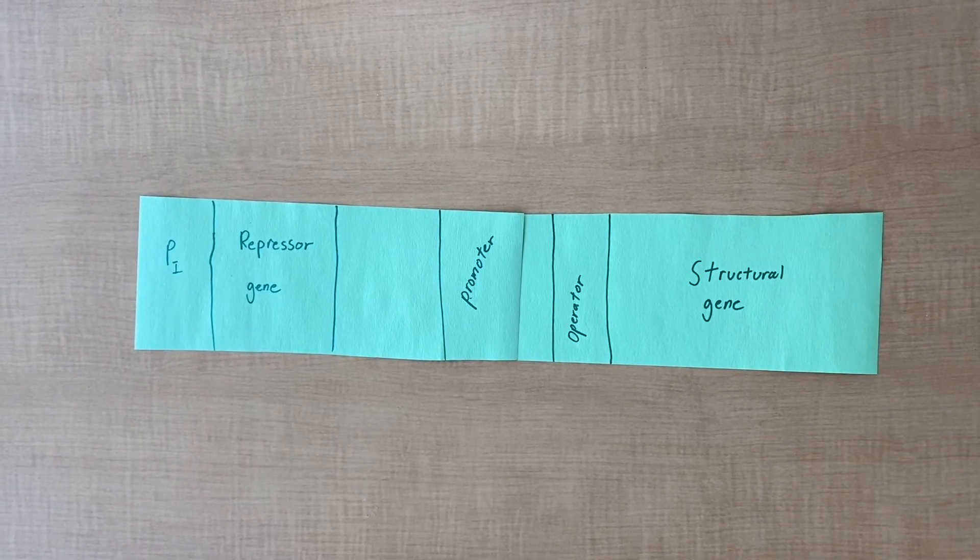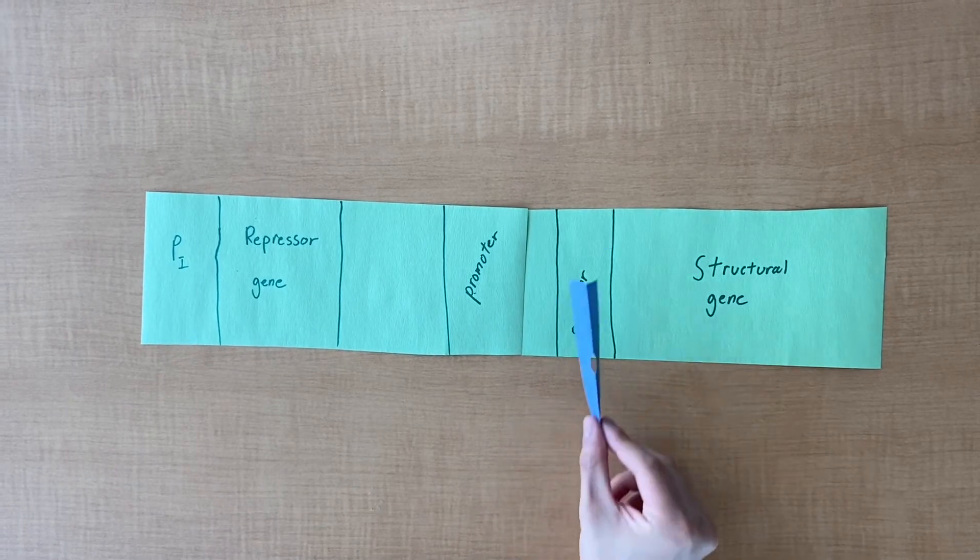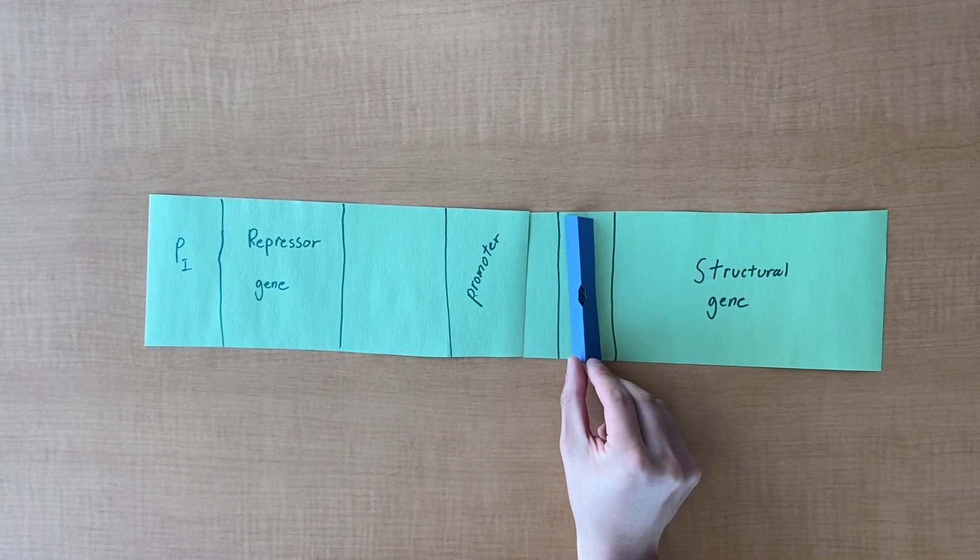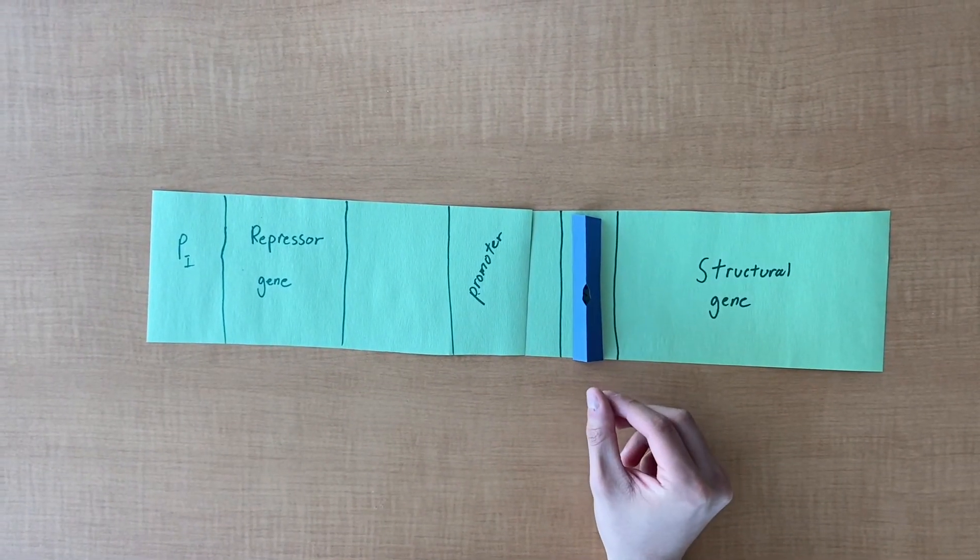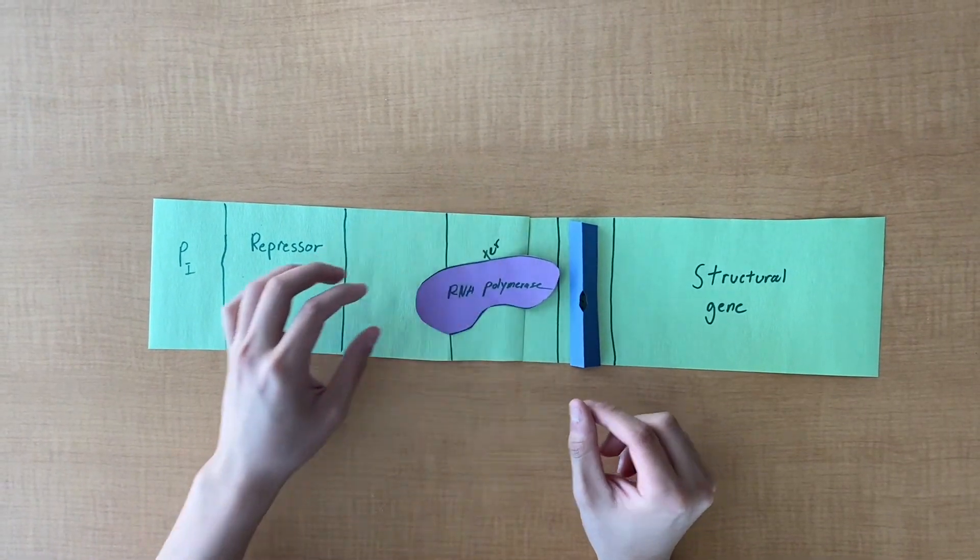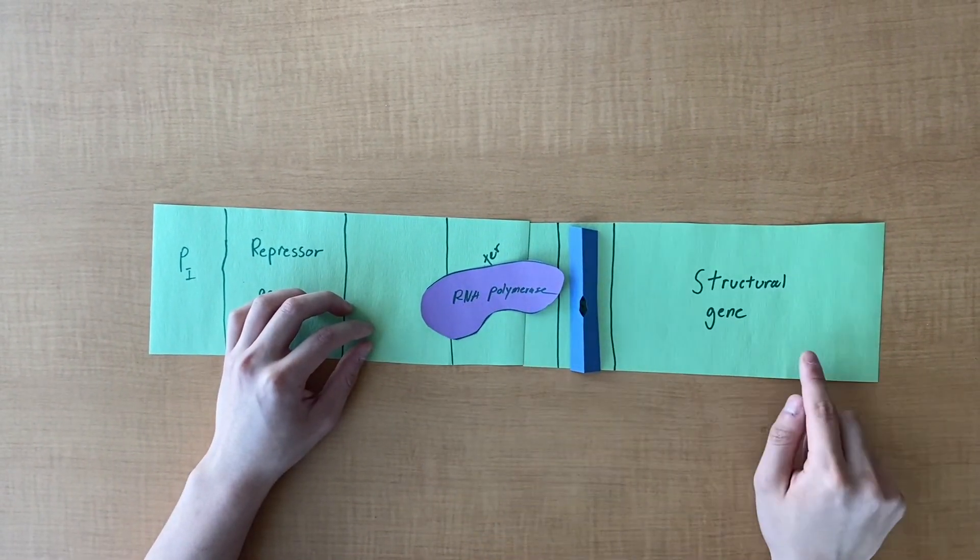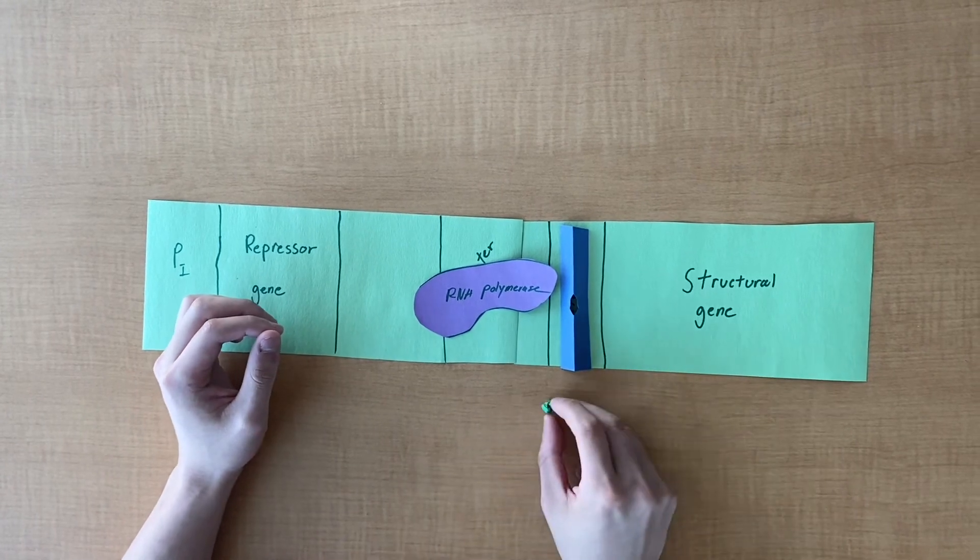Since this is a negative inducible regulation, in the absence of the effector molecule, the repressor protein stays active and binds to the operator site at the DNA, thus preventing RNA polymerase from transcribing the structural gene.